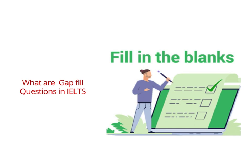The gap-fill question type in IELTS reading is a task where you are given a passage with some missing words — usually words that are important to the overall meaning of the text. Your job is to fill in these gaps with the correct words. Think of it like completing a puzzle where you need to fill in the right words to make the text complete and meaningful. To do well, you need to carefully read the passage to understand its context and meaning, and pay attention to words or phrases that come before and after the gaps, because they can give you clues about what kind of words should go in those spaces.